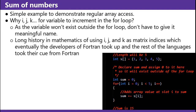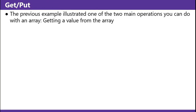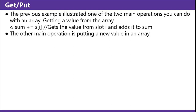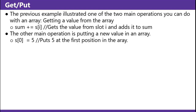In this example on the right you're declaring the array 1, 2, 3, 4, 5, you're initializing the sum to zero, and then in this for loop you're going through every value and adding the value at the i-th slot to the sum — these numbers 1 through 5 add up to 15 at the end. Get and put: the previous example illustrated one of the two main operations you can do with an array — getting a value from the array. 'sum plus equals s sub i' gets the value from slot i and adds it to the sum. The other main operation is putting a new value in the array: 's sub 0 equals 5' puts 5 in the first position in the array.